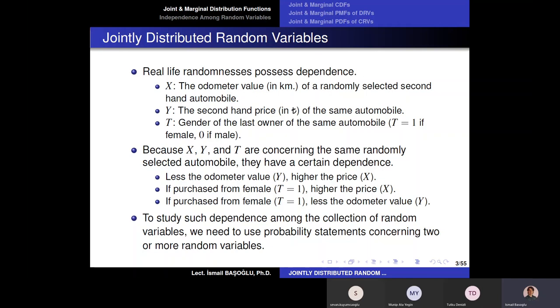If X is dependent with Y, and T is dependent with Y, there will also be an indirect dependence between X and T. So if the last owner is female, the odometer value is supposed to be low as well, because females tend to use automobiles less frequently than males. For example, in long distances you usually see male drivers, while in short distances it is more equal. So all three random variables are dependent on each other because they are defined on the same automobile.